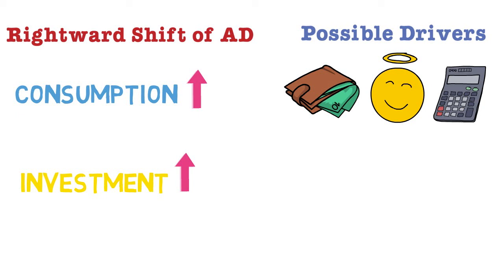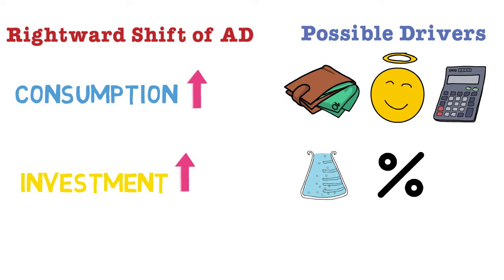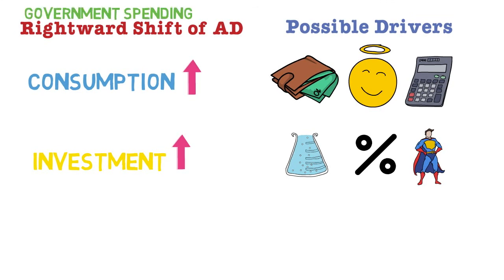Next, if investment increases, aggregate demand shifts to the right. This can happen for a number of reasons: companies may increase spending on research and development to gain a competitive advantage, possibly supported by a subsidy. A reduction in corporation tax — the tax on their profits — means companies can afford to invest more. Businesses may also simply be more optimistic about the future; if business confidence and sentiment is up, businesses may decide to invest more in capital equipment.